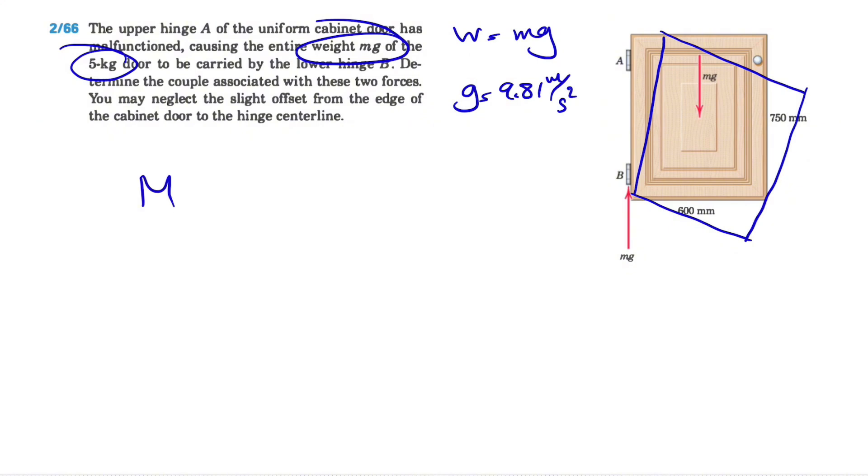The moment that we're going to find, or the couple that is produced by these two forces, is basically F times d. F is our force and d is the distance between these two forces, which is what we have here. So the rest of this question is not hard at all. We basically have to find the force, which is the weight.